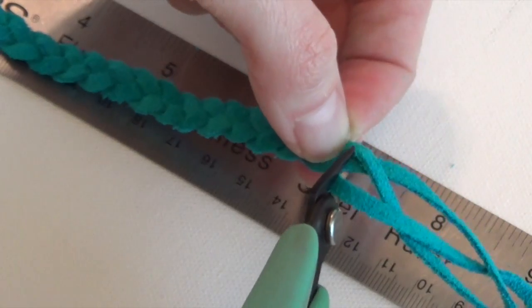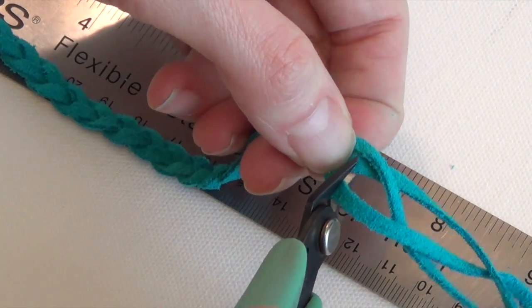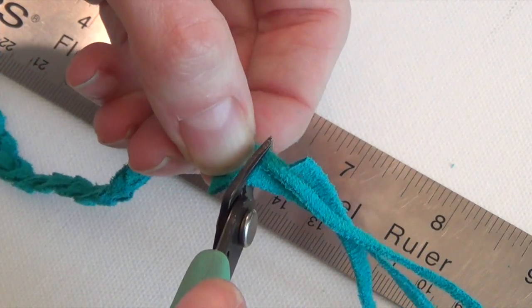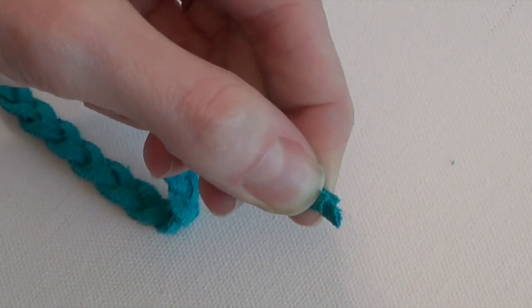So you start measuring from the clasp. I'm going to cut mine at 7 1/2 because I want it to be 7 3/4 and that will just account for the jump ring because the crimp end is not going to take up any space really.